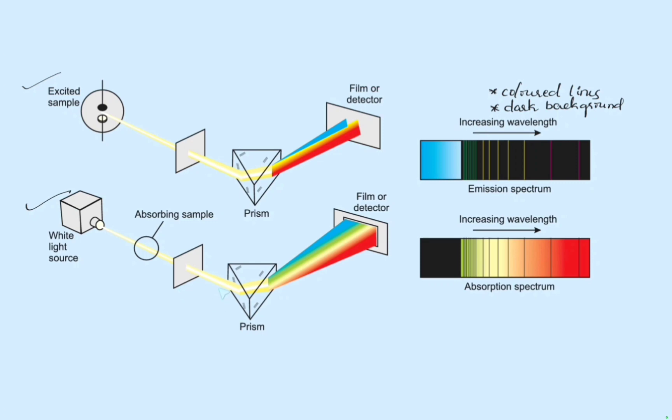These transmitted radiations are passed through the prism and they are detected by the photographic film or the detector. In the absorption spectrum, you have dark lines and colored background.